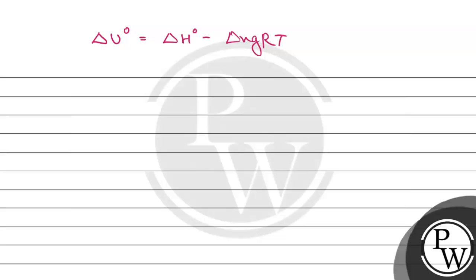First, we will write the reaction for the formation of liquid methyl acetate. It is formed by carbon solid, hydrogen gas, and oxygen gas. When combined, it leads to the formation of CH3COOCH3 which is a liquid. This is the reaction.